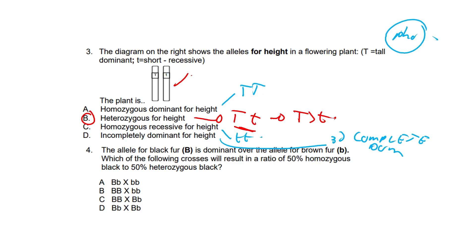Which of the following crosses will result in a ratio of 50% homozygous black to 50% heterozygous black? The answer is A. For this cross, a heterozygous black individual, capital B small b, is crossed with a homozygous recessive brown individual, bb. The Punnett square for Bb × bb yields 50% Bb heterozygous black and 50% bb homozygous brown. Therefore, the ratio of 50% homozygous black to 50% heterozygous black cannot occur, which rules everything else out.